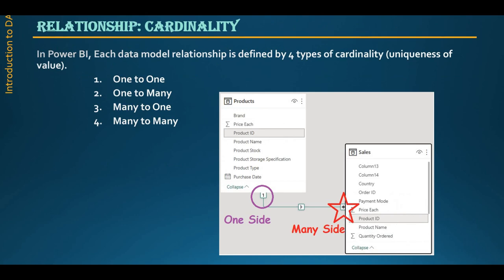The relationship or cardinality has mainly four types: one to one, one to many, many to one, or many to many. When we drag and drop — as we already saw during data modeling in Power Query — dragging product key to the sales table automatically creates a relationship. The one side denotes the dimension table and the star or many side denotes the sales table as the fact table. This is the filter flow or cardinality showing the relationship from one to many.